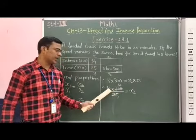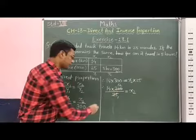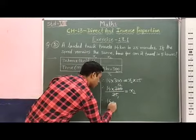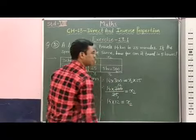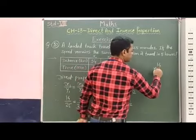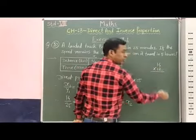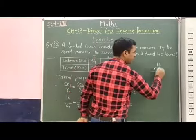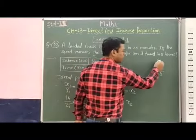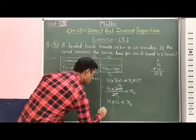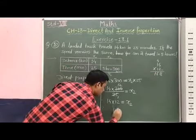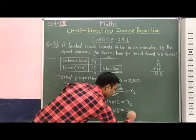Now students, if we multiply 14 and 12, therefore, 14 into 12, which is equal to x2. Now, 14 into 12: 2 times 4 is 8. Therefore, 12 plus 12, 12 plus 4, 16. Therefore, 168. Therefore, 168 is equal to x2.